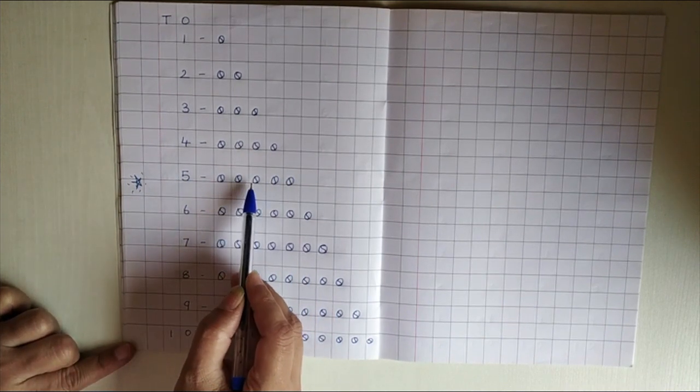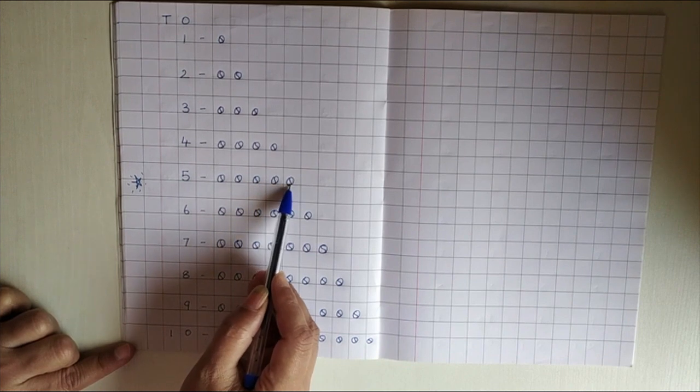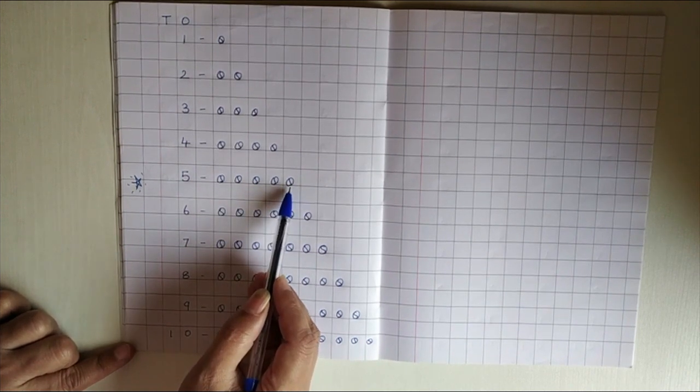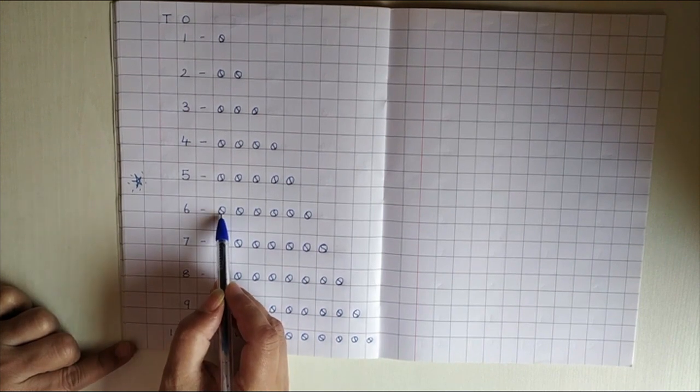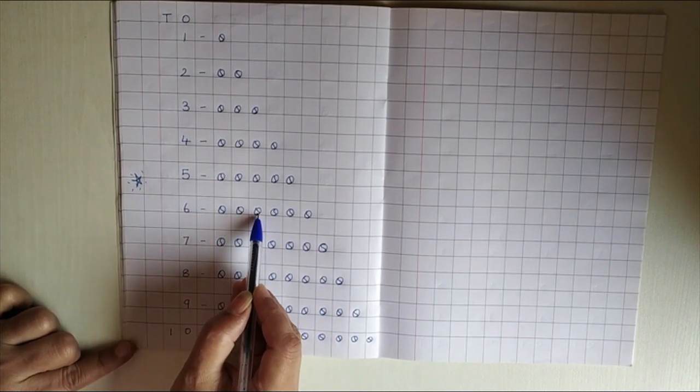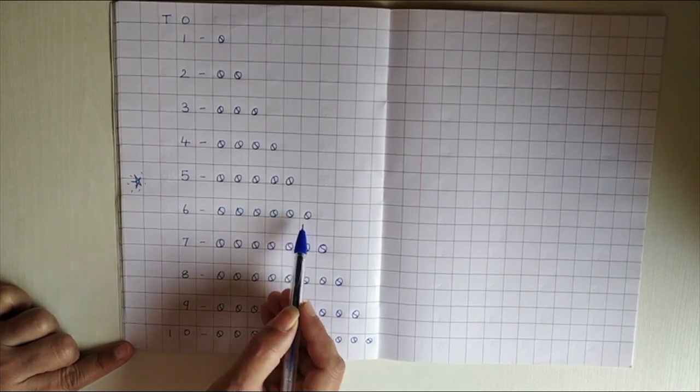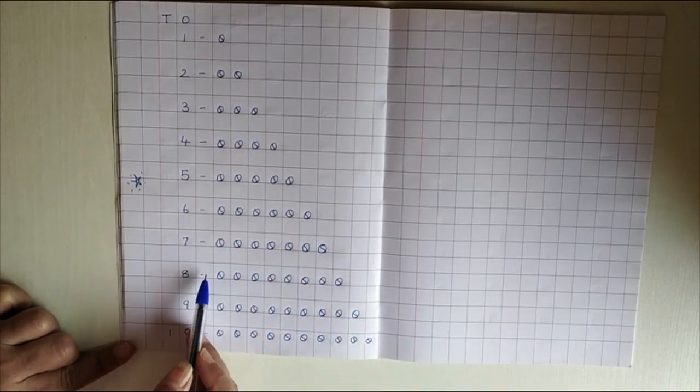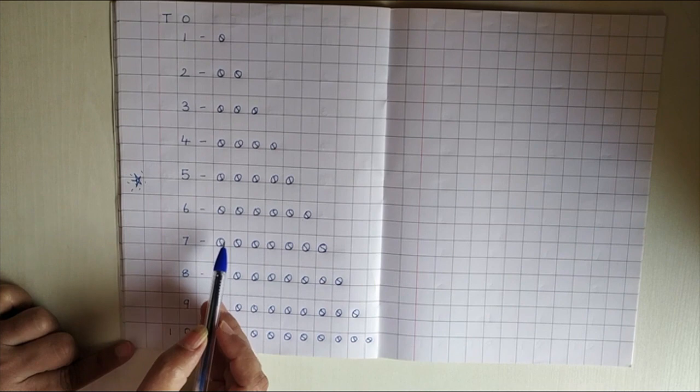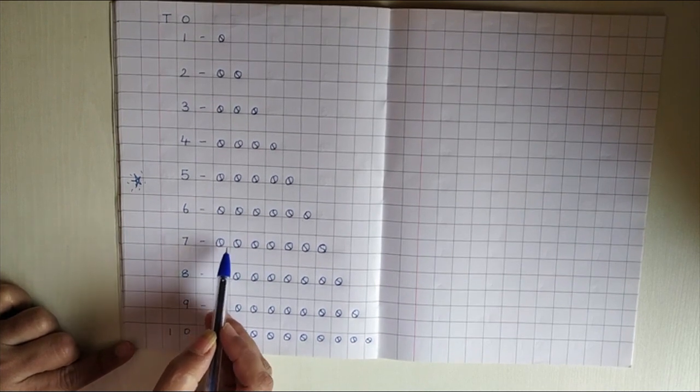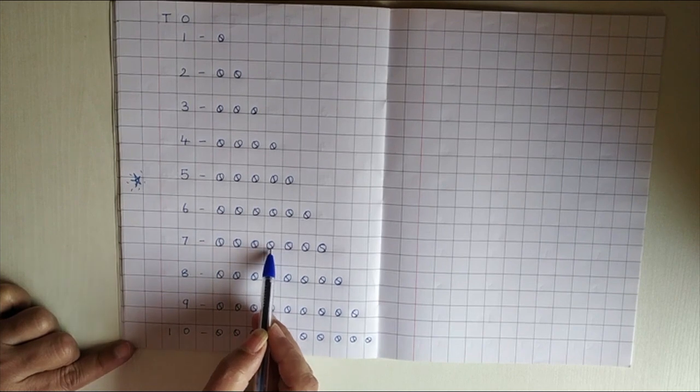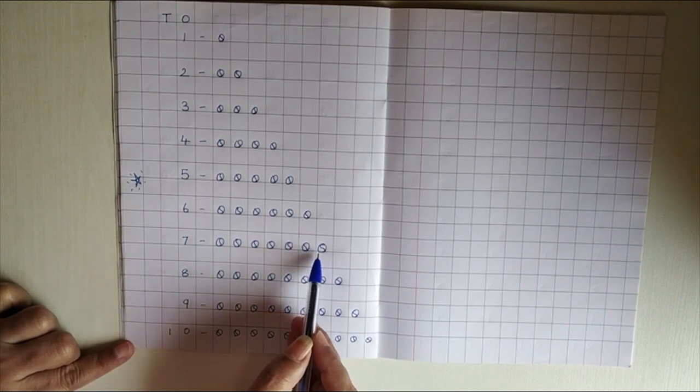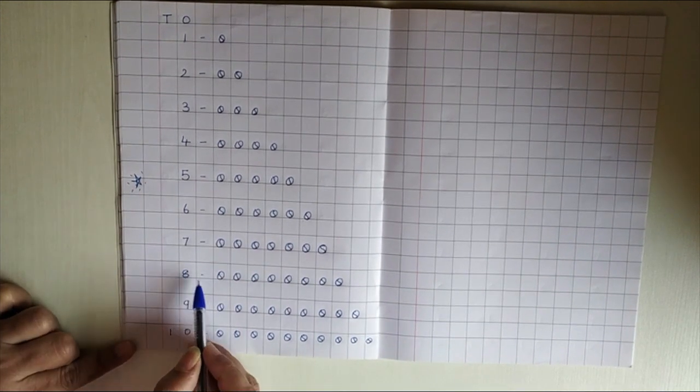Number 5: 1, 2, 3, 4, 5. So we are having 5 balls over here. Number 6: 1, 2, 3, 4, 5, 6. So there are 6 balls. Are you counting? I hope children are counting along with me. Now, 7: 1, 2, 3, 4, 5, 6, 7.